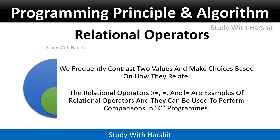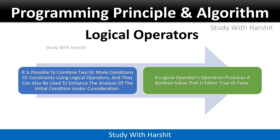Relational operators: we frequently contrast two values and make choices based on how they relate. Operators such as greater than, equal to, and more are examples of relational operators, and they can be used to perform comparisons in a C program.